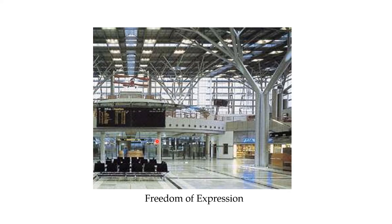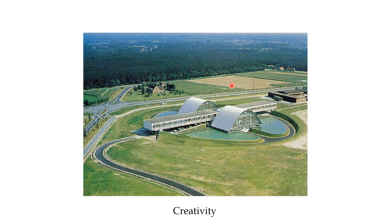Here you can see examples of steel structures demonstrating freedom of expression. This is a truss-type structure that looks beautiful. Steel can be molded into any direction, and a key property of steel structures is that steel is strong in both compression and tension. You can see the creativity and beauty that can be achieved with steel structures.